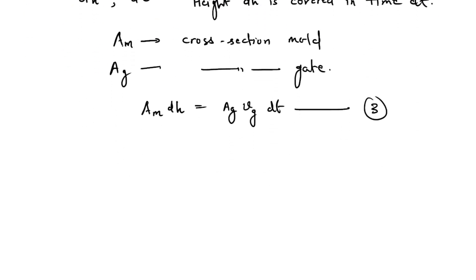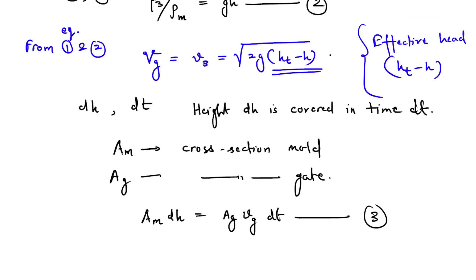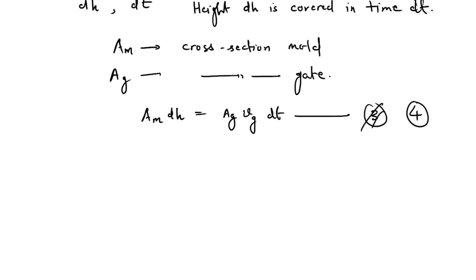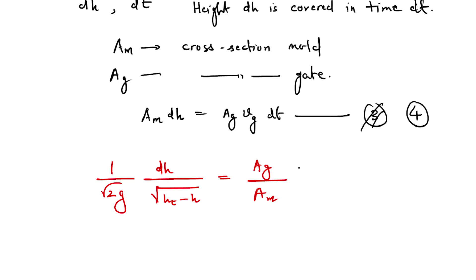Calling the previous expression equation four, if we equate equations three and four, we get: 1 divided by root(2G) times dH divided by root(H_T minus H) equals A_G divided by A_M times dT. This can be nicely integrated. We start with time T equals zero and height equals zero, and integrate up to the filling time T_F, which is our final value.